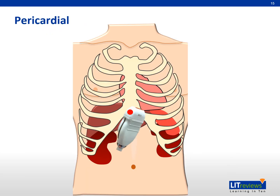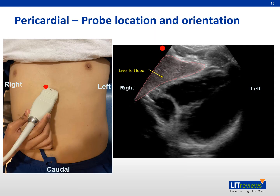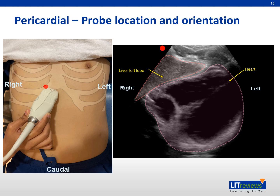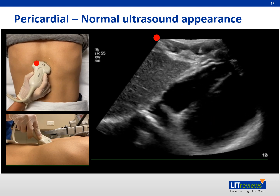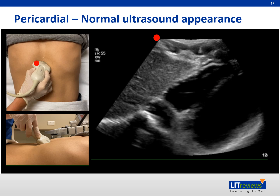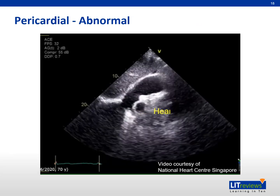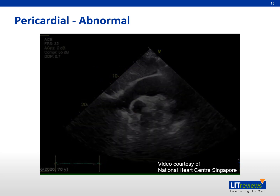Next is the pericardial region. Use the left lobe of the liver as an acoustic window for evaluation of the pericardial space. Place the probe on the subxiphoid, orientate it transversely with the marker directed to the patient's right side, and aim the probe towards the patient's head and left shoulder. Flatten the angle of the probe to the skin and apply gentle pressure downwards to maintain probe contact. The liver can be seen in the near field with the adjacent heart at the far field, and all of the heart must be visualized by increasing depth. In this pericardial view, an echoic fluid is seen surrounding the heart, suggesting pericardial effusion.